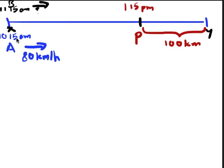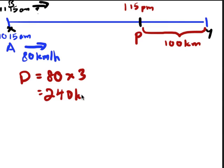So between 10:15 and 11:15 is actually 3 hours. Am I right? 11, 12, 1. So 3 hours. And we have the speed. Can we find the distance? Yes, we can. So the distance actually equals to speed times time. 80 times 3, which gives me 240 km. So what do I know now? I know the distance between here and here is 240 km.